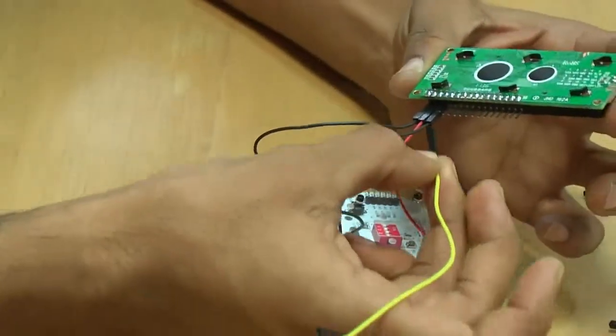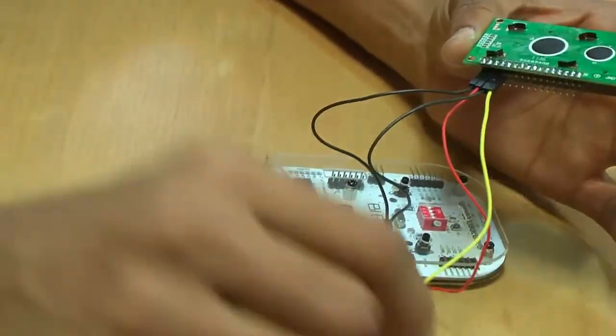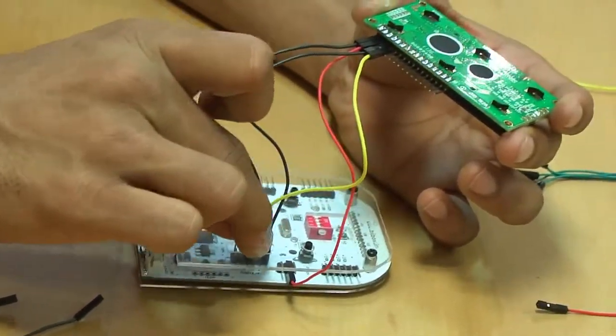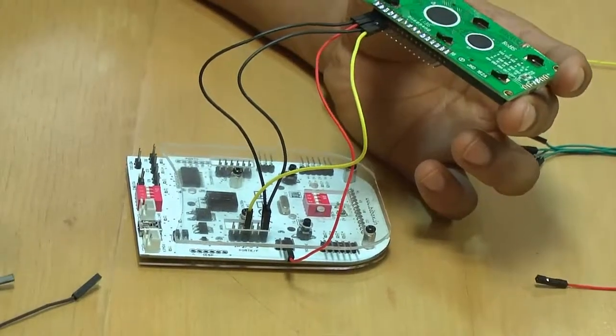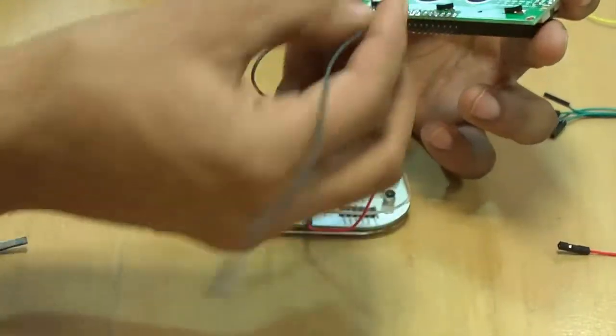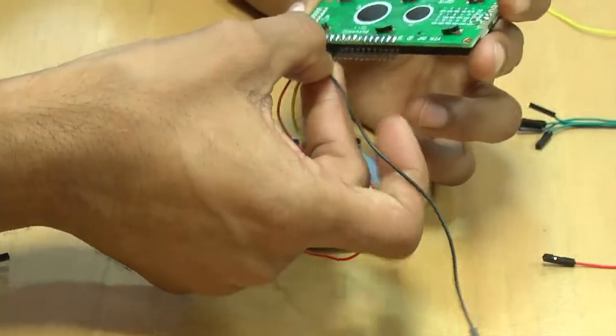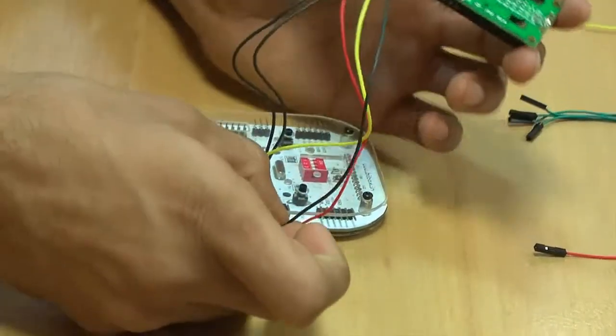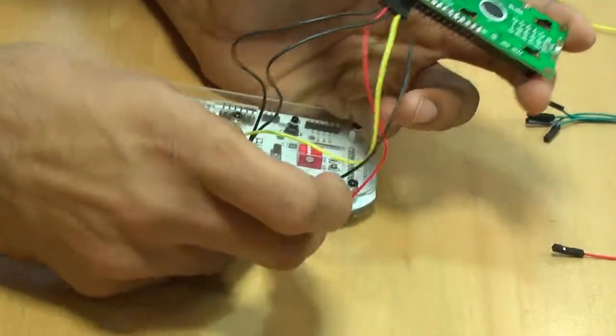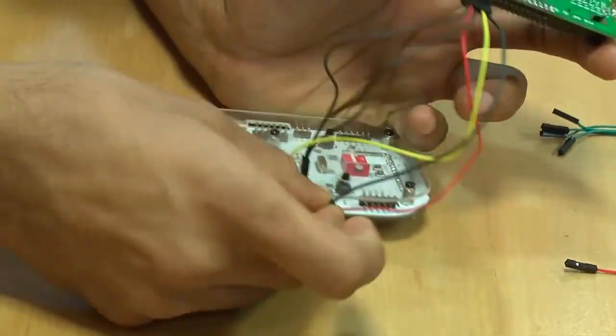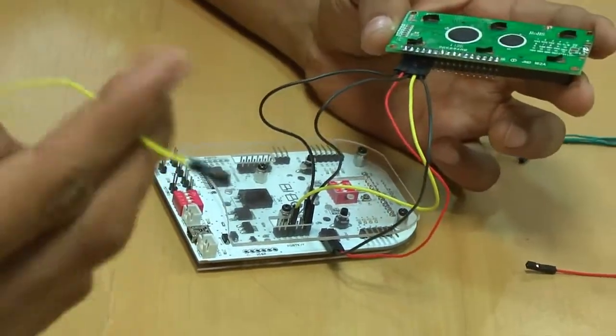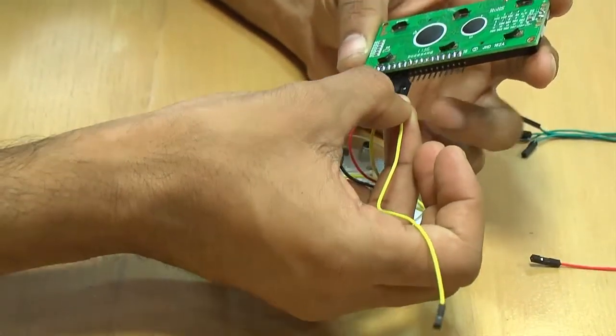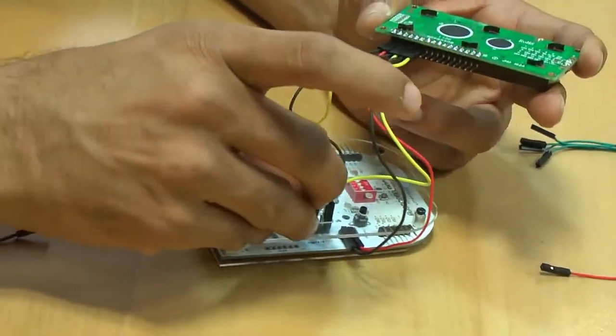Next, pin number 4 I connect a yellow wire and this goes to F2 of B-Box. Next, pin number 5 I connect a black wire and this also connects to minus of B-Box. Next, I take yellow wire, pin number 6, this is connected to F1 of B-Box.